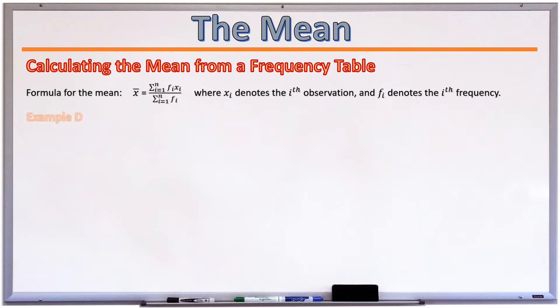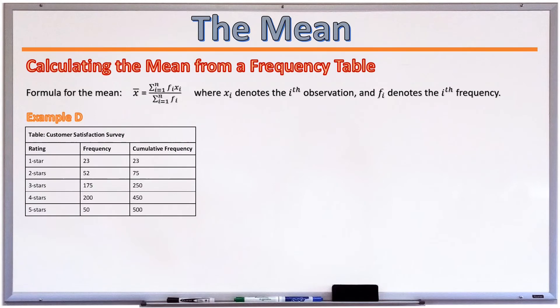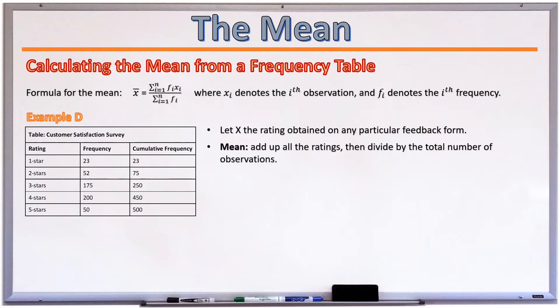Example D. Consider the data set shown below. This is the same data set taken from example B. And calculate the mean rating from the customer satisfaction survey. So again, we have one star going all the way up to five stars, and we have their respective frequencies. Solution. Let x be the rating obtained on any particular feedback form. In order to calculate the mean, we would intuitively add up all of the ratings obtained, and then divide the result by the total number of observations.